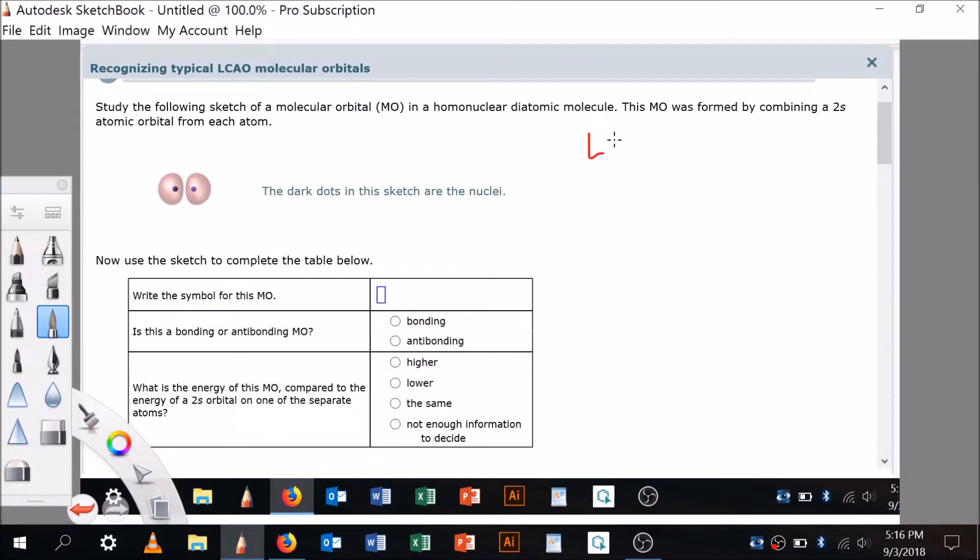So remembering that LCAO stands for Linear Combination of Atomic Orbitals. Remembering that the linear combination means that we're going to have two atomic orbitals. An atomic orbital plus an atomic orbital is going to give you two molecular orbitals. A linear combination means addition or subtraction. Addition or subtraction of atomic orbitals gives you molecular orbitals.